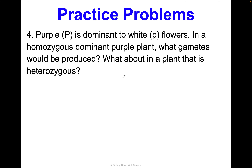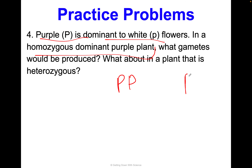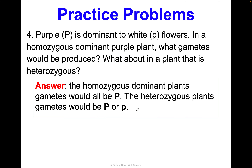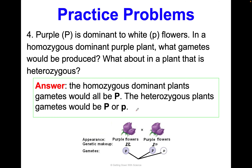In a homozygous dominant purple plant, what gametes would be produced? What about a heterozygous plant? Purple is dominant, so homozygous dominant is capital P capital P. Heterozygous is capital P lowercase p. The homozygous dominant plant gametes would all be uppercase P. The heterozygous plant gametes would be either uppercase P or lowercase p. But look — they're both purple in appearance. Genes are crazy.